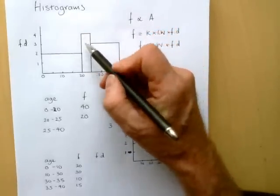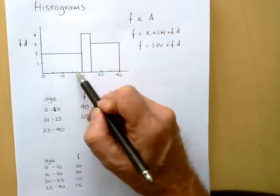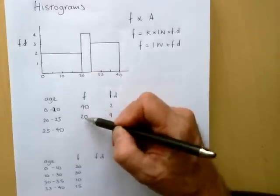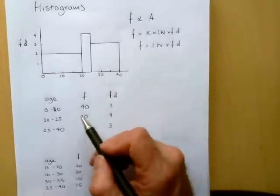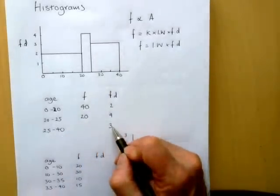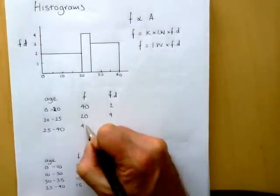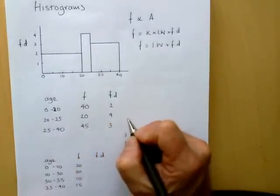This shaded space here will take up exactly half of that area. Hence the frequency is half the other frequency. Finally, the width of 15 times the frequency density of 3 gives me a frequency of 45.